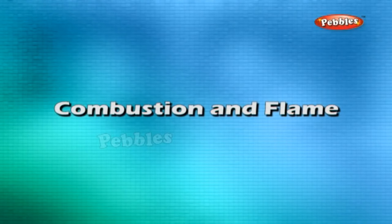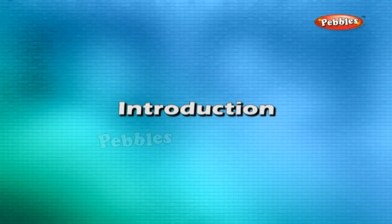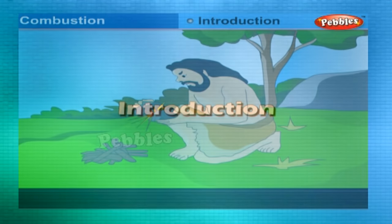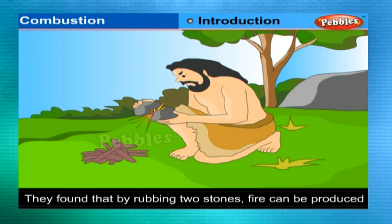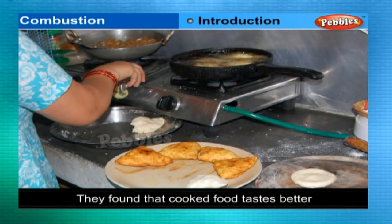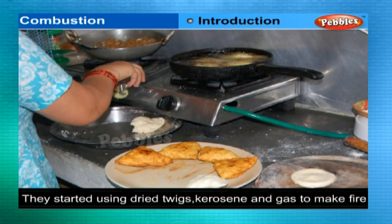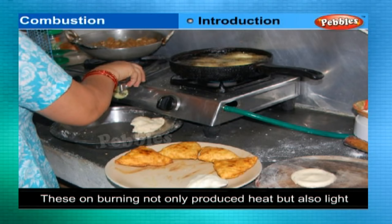Combustion introduction: In the Stone Age, people never knew the use of fire and used to eat raw food. It was by accident they found that by rubbing two stones, fire can be produced. They found that cooked food tastes better. Slowly they started using dried twigs, coal, kerosene, and then gas to make fire.